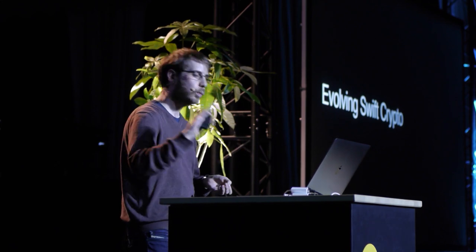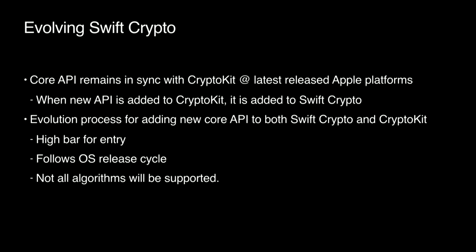One of the other important areas of focus for us in this work, other than making sure these two libraries were perfectly compatible, was to make sure we could evolve Swift Crypto going forward. With open source projects, it's extremely important that the community is able to guide the evolution of the project and to propose new APIs, as well as to fix bugs and improve the infrastructure. The core API of Swift Crypto will remain in sync with CryptoKit's API as it stands on the latest releases on Apple platforms. That means whenever a new API is added to CryptoKit, we will be adding it to Swift Crypto as well, except where that API relies on specialized hardware.